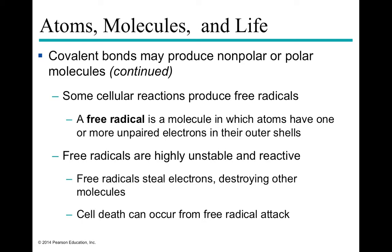Free radicals are molecules with unpaired electrons on their outer shells — they're very unstable and react quickly by stealing electrons from other molecules, destroying them. Think of it like a classroom where one student without a pencil steals from the next student, who then steals from the next — pretty soon everyone is grabbing pencils and no work gets done. Free radicals can induce cell death by creating a cascade where every molecule pulls an electron from its neighbor, destroying molecules in the process.